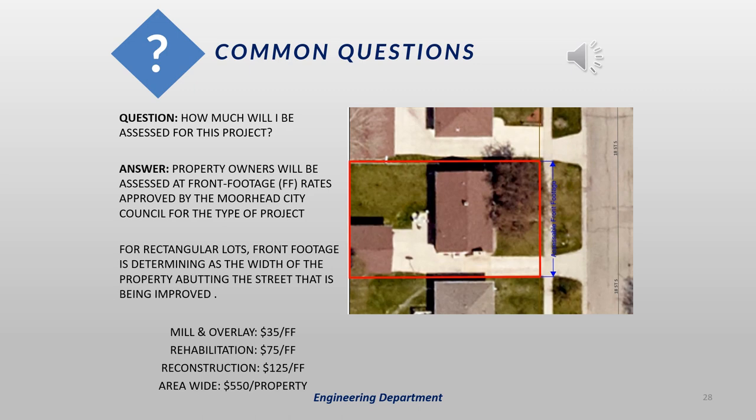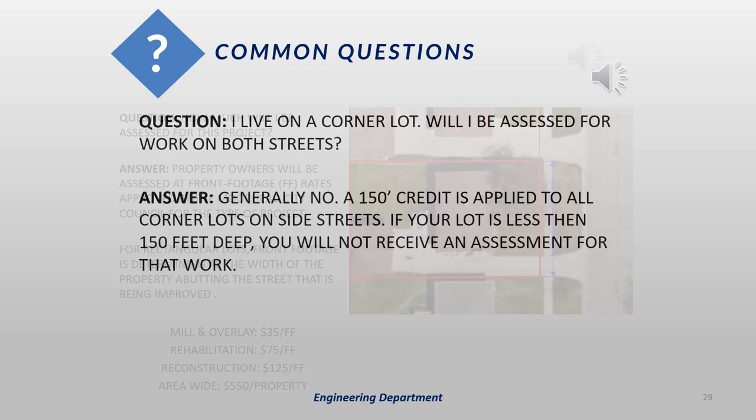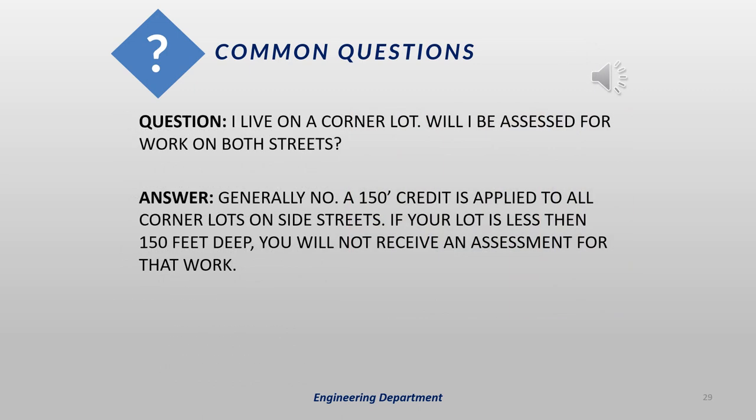Every property in the city is assigned a north-south collector street and an east-west collector street. A common question when doing work on streets that intersect is: if I live on a corner lot, am I going to be assessed for work on both streets? The answer is generally no. There is a 150-foot credit applied to all corner lots on the side street side of the lot, so if your lot is less than 150 feet deep, you're generally not going to receive an assessment for that work.